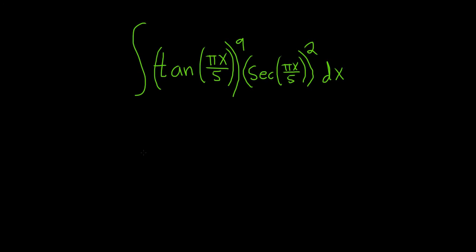So even secant, save a secant squared. Odd tangent, save a secant tangent. So in this case, we have an odd tangent and an even secant. So the easiest approach, I think, is to save a copy of secant squared because we have an even secant.